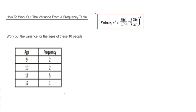Sigma means sum of, f is our frequency, and x is our data values. So let's have a look at the example here. We've got to work out the variance for the ages of these 10 people.